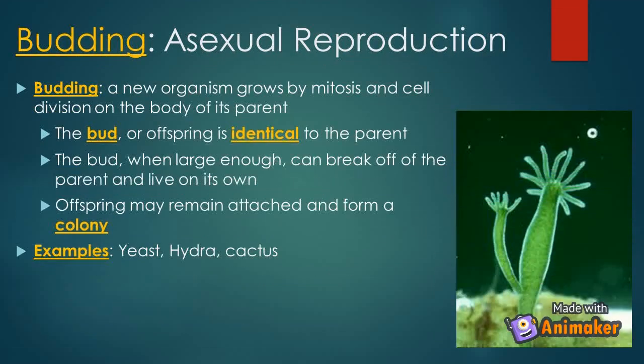Another kind of asexual reproduction is budding. It is a new organism grown by mitosis and cell division on the body of its parent. The bud, or offspring, is identical to the parent. The bud, when large enough, can break off of the parent and live on its own. Offspring may remain attached and form a colony. Good examples are yeast, hydra, and cactus.